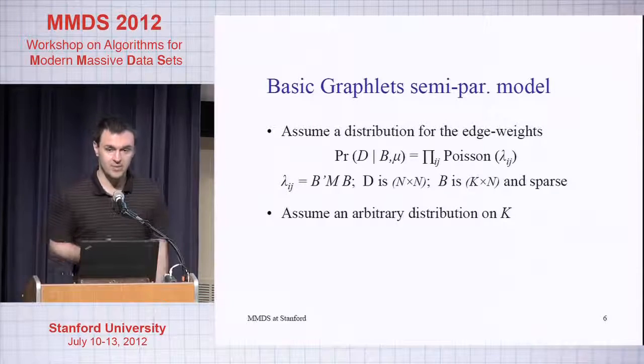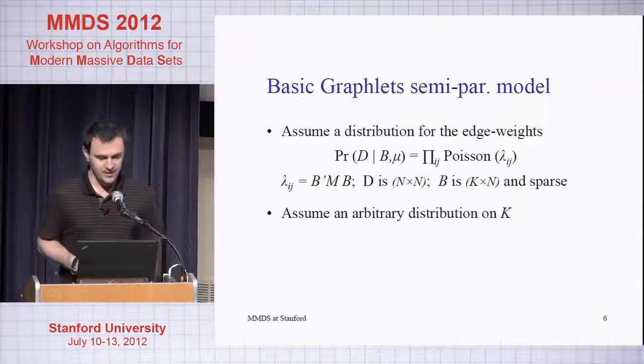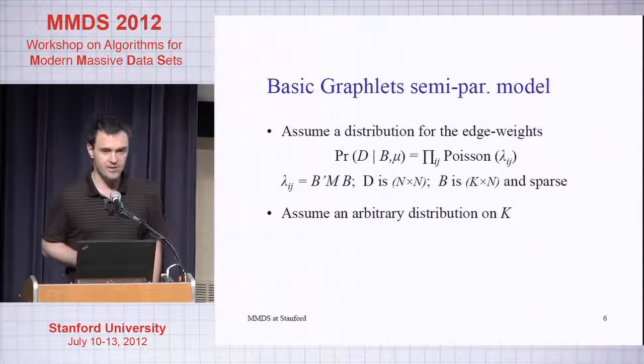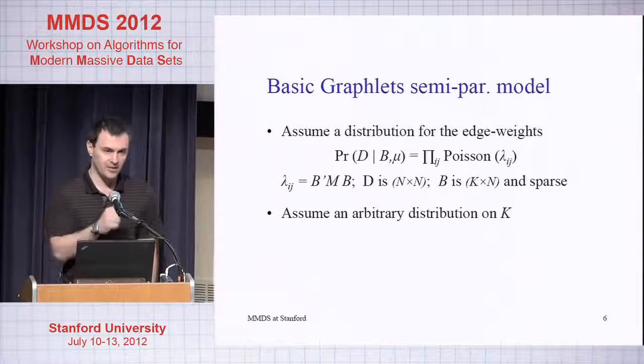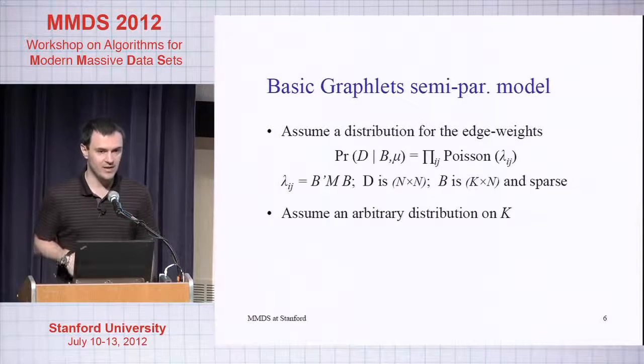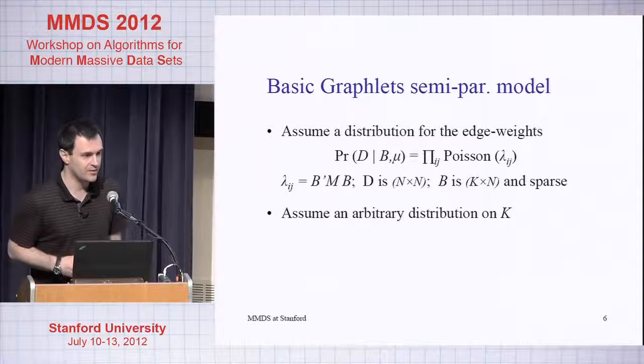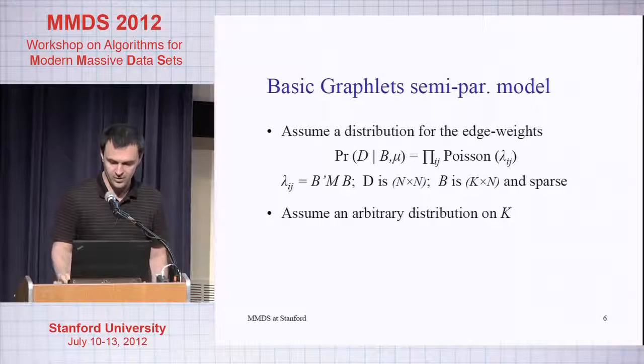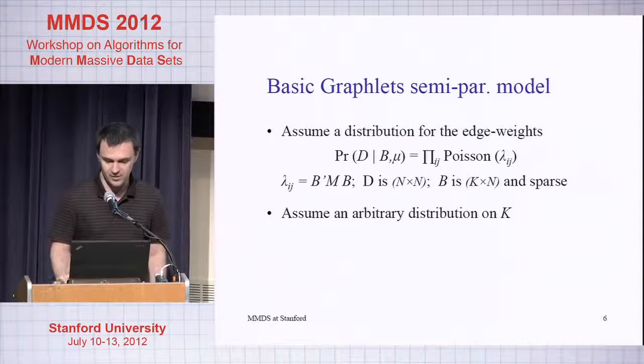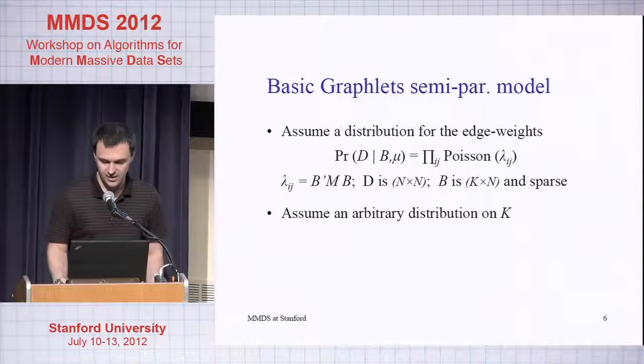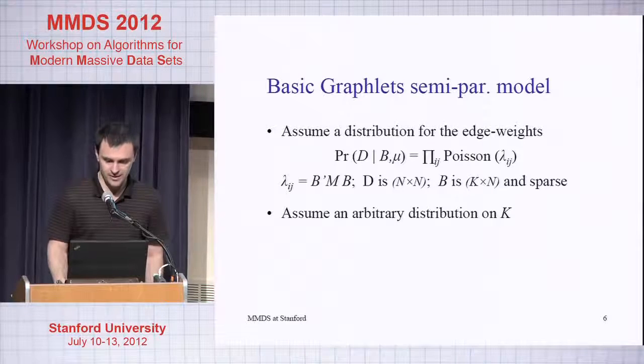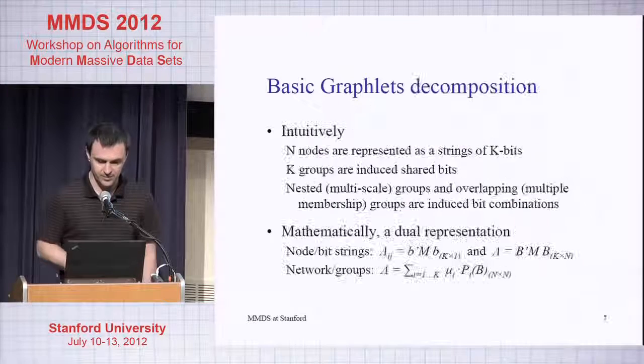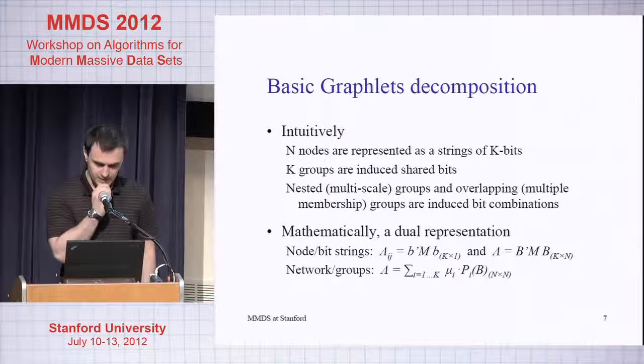This matrix capital B is the binary factor matrix with n rows, one row for each individual, and has K columns. It's binary and it is sparse. M is this K by K matrix that is diagonal, and on each element of the diagonal there's a weight that is going to tell you how much the particular basis is going to contribute to the overall traffic. You can assume an arbitrary distribution on K, or in general we actually just learn it from the data.